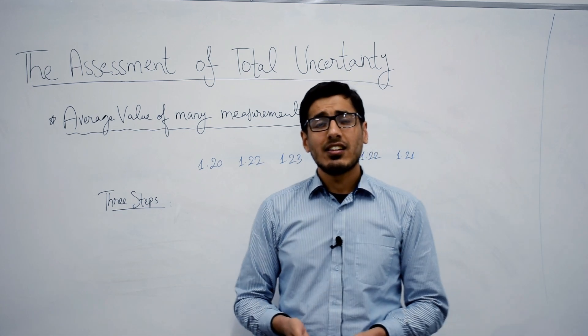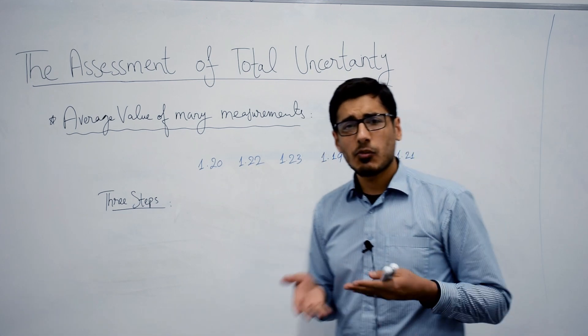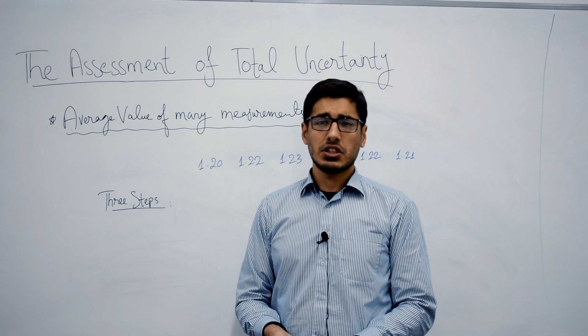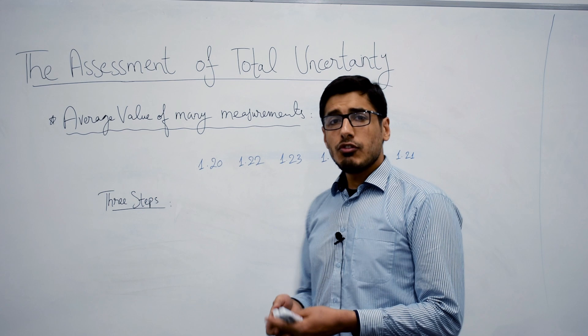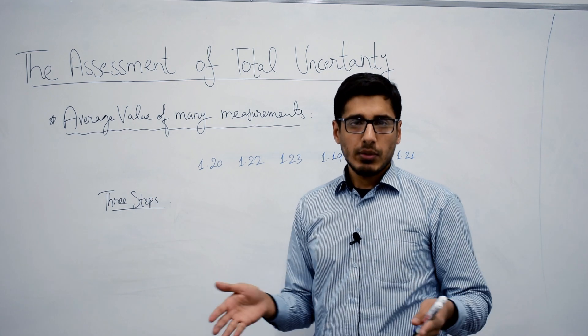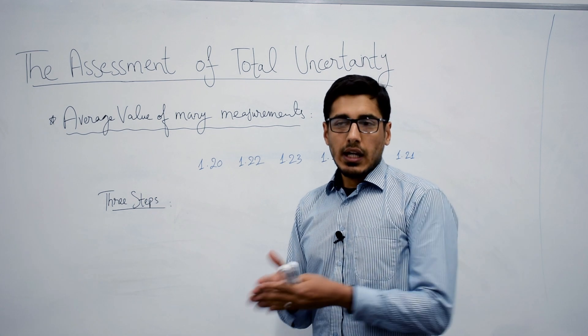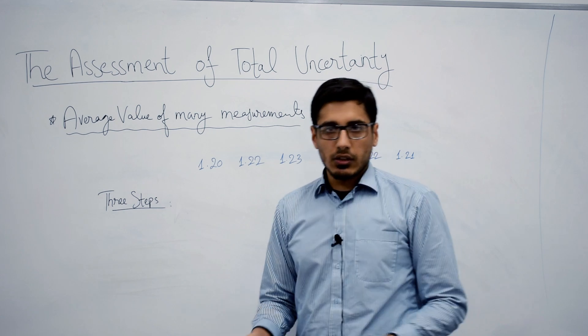Hello all, welcome back. In this series we have been talking about the assessment of total uncertainty in different situations. In this lesson we are going to talk about when you have multiple measurements and you are taking the average value, and in that case what is the uncertainty in the final result.